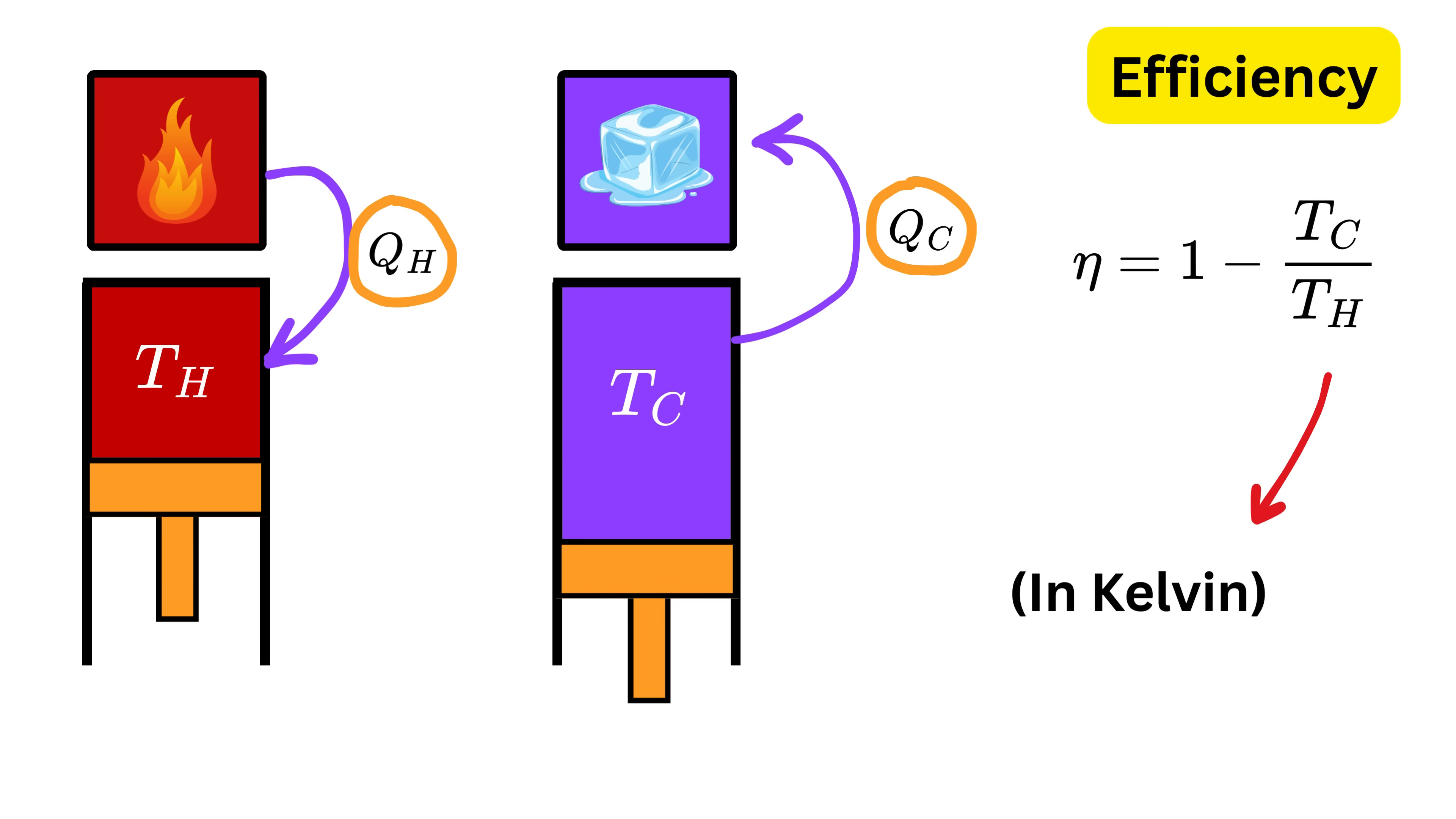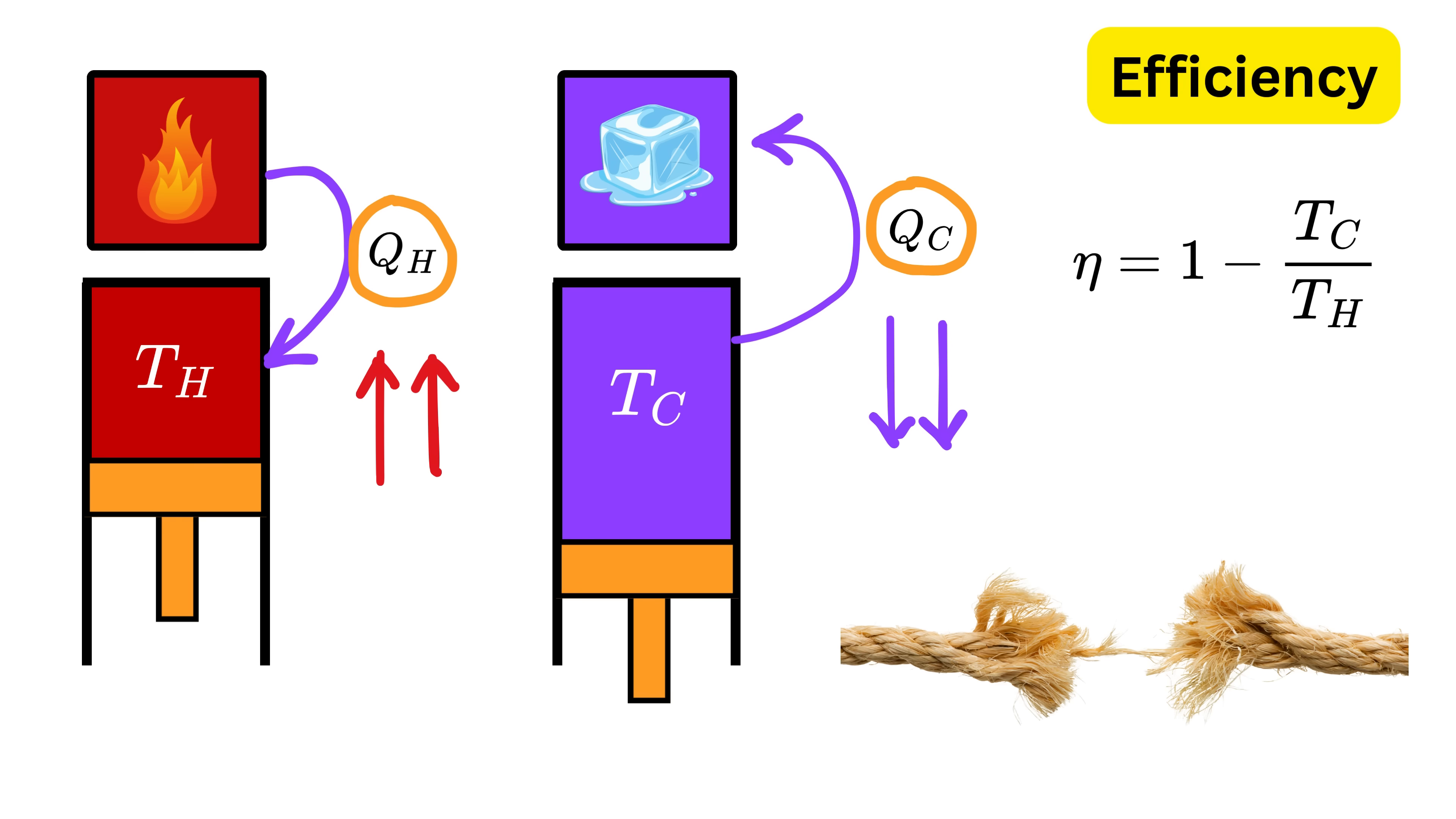The power of this result is that the Carnot efficiency depends only on the two temperatures and not on the gas or machine details. So it is the absolute upper limit any heat engine between those two temperatures can ever reach. To improve efficiency, you must raise T_h or lower T_c, but practical limits like material strength, friction, heat leaks, and other irreversibilities always keep real engines below the Carnot bound.